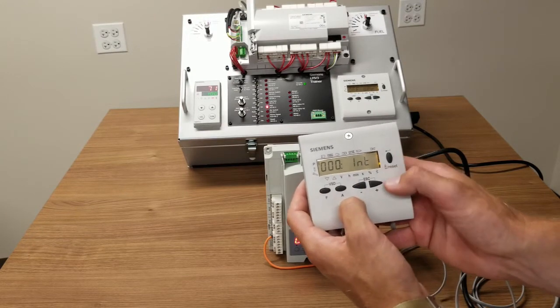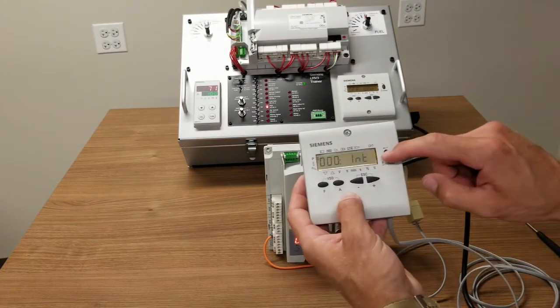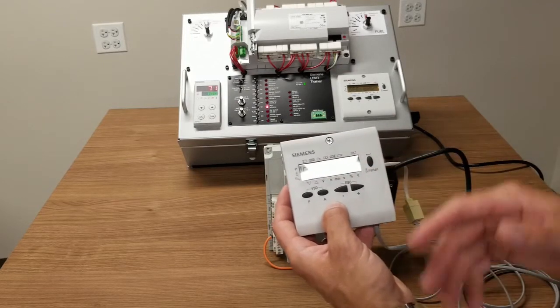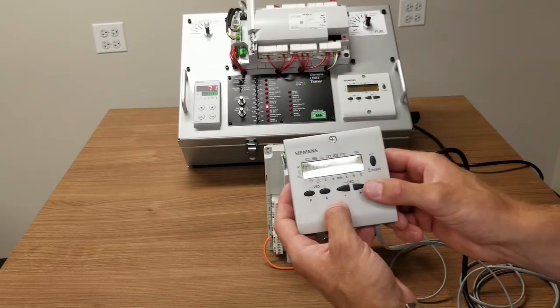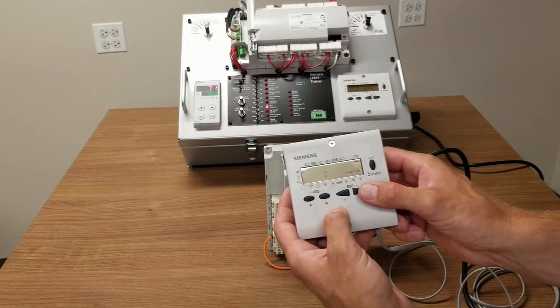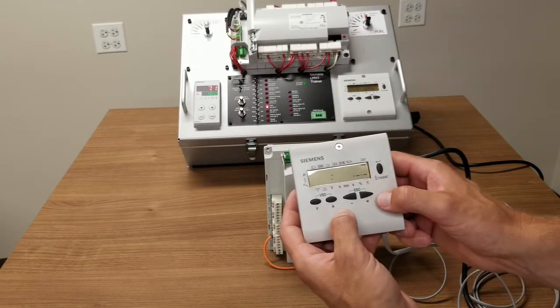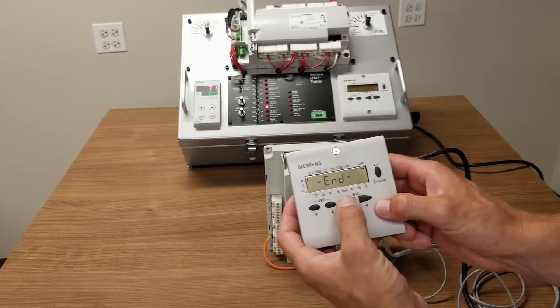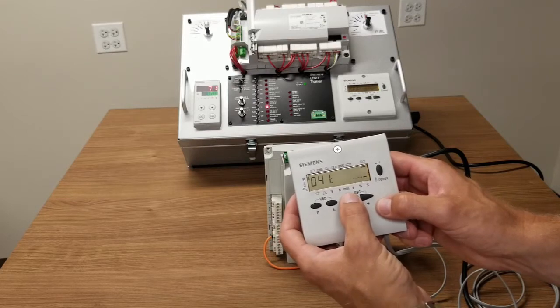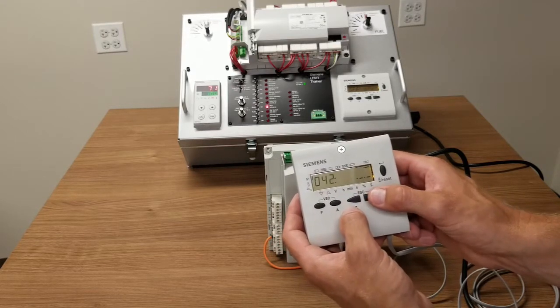To get into a submenu, simply hit the enter or reset button and it will take you into the submenu, in this case of the zero set, and that includes any parameter starting with zero, so any parameter under 100. Hitting plus or minus will allow you to simply scroll through the list of parameters in that subset.